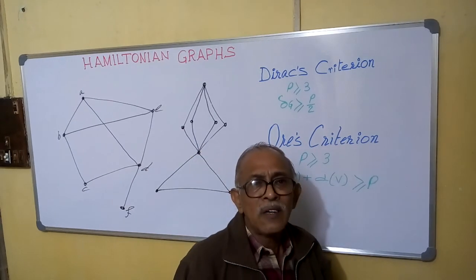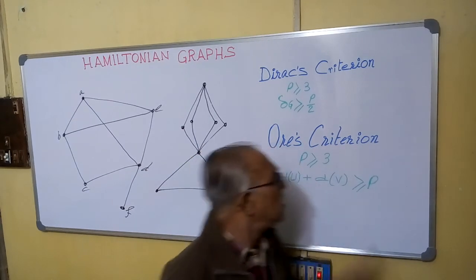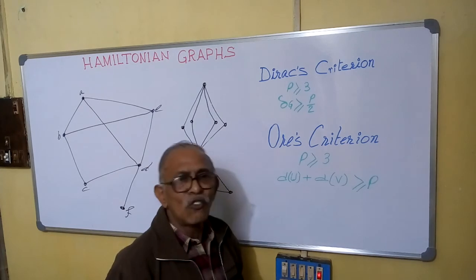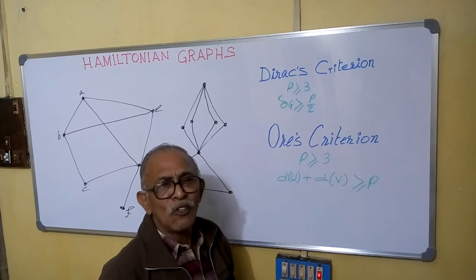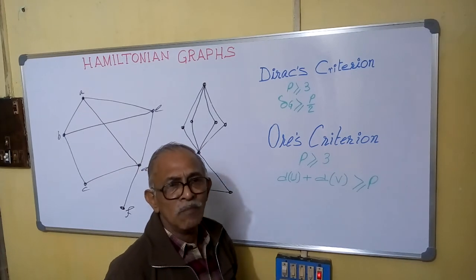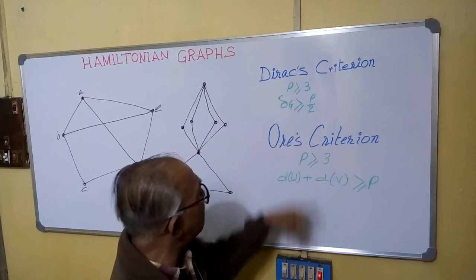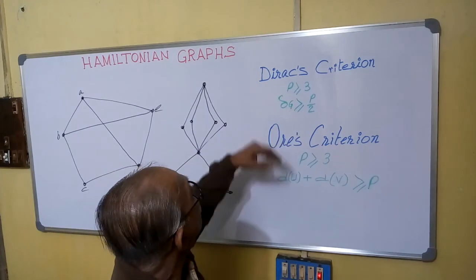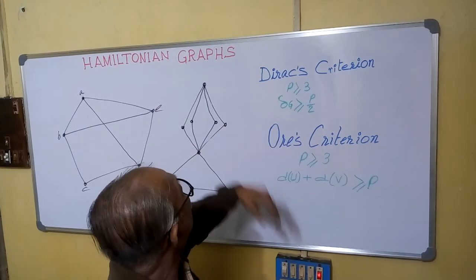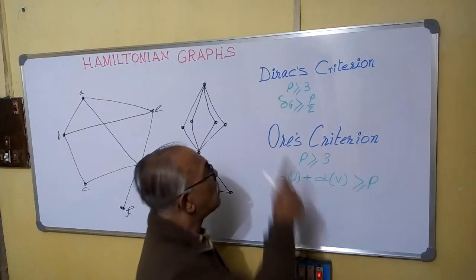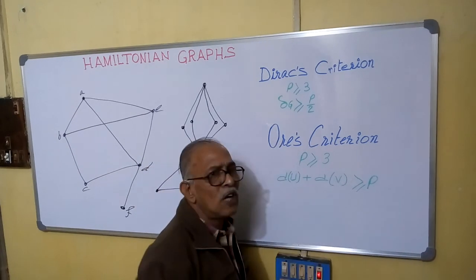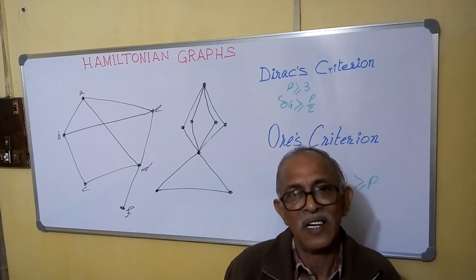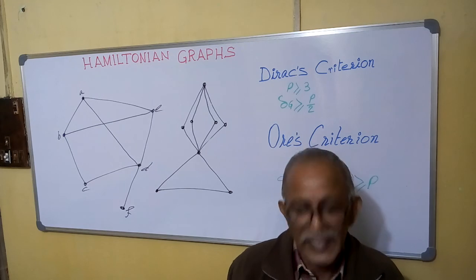If a graph is not fulfilling this criteria, it can still be a Hamiltonian graph. So these conditions are not used to prove which graph is non-Hamiltonian. These conditions are only utilized to prove that a graph is Hamiltonian. Thank you.